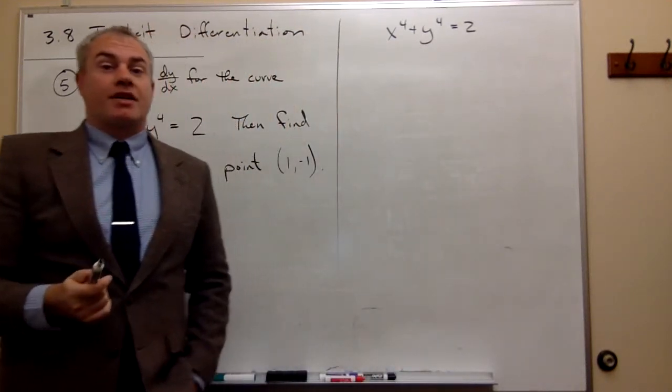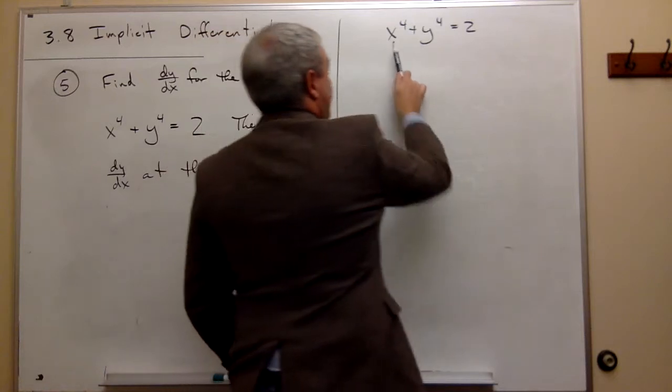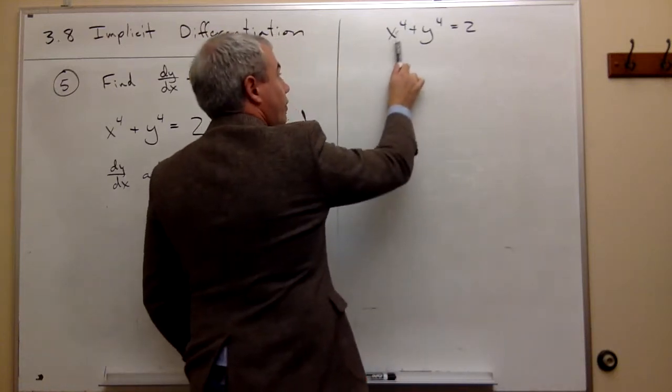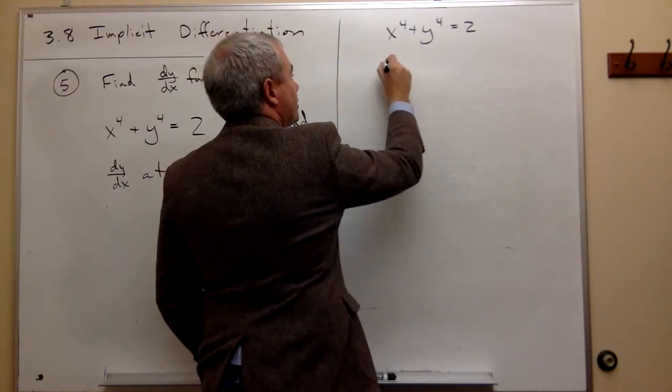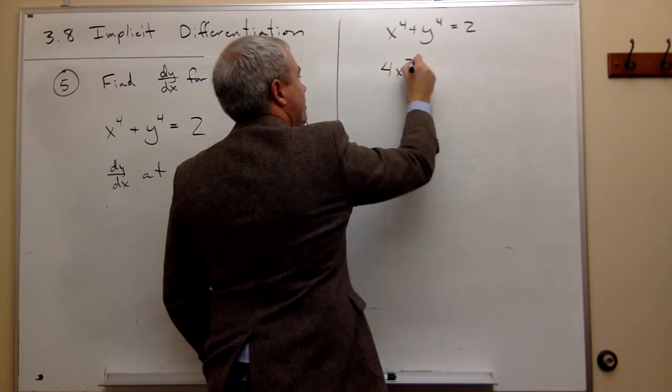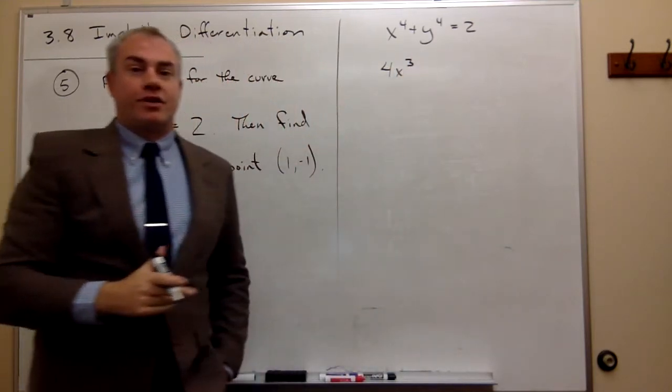The first piece that we want to take the derivative of is the x^4 piece and the derivative of x^4 is 4x^3. We already know how to do this one.